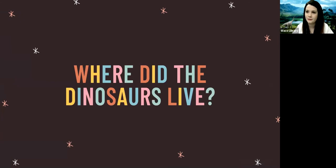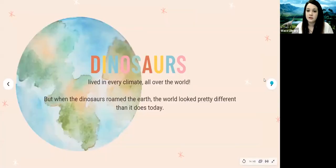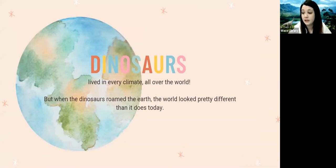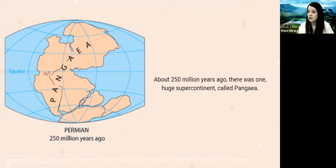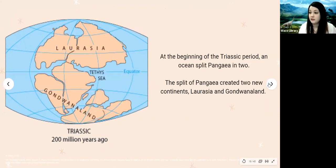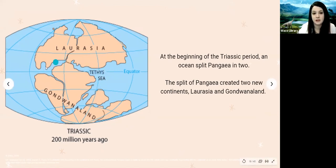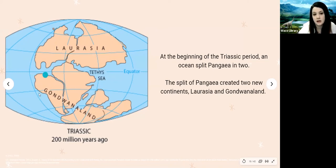So where did the dinosaurs live? Dinosaurs lived in every climate all over the world. But when dinosaurs roamed the earth, the world looked really different than it does today. About 250 million years ago, there was one huge continent called Pangea. Then at the beginning of the Triassic period, an ocean called the Tethys ocean made its way through Pangea and split the supercontinent into two different continents — Laurasia and Gondwanaland.